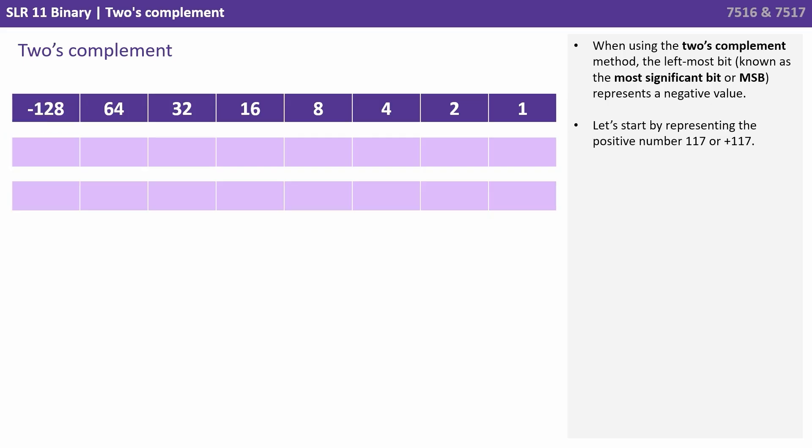Let's start by representing the positive number 117. Well firstly it's a positive number so we put a zero in the most significant bit. This is the sign bit. Remember zero is positive. If we put a one here we'd have negative 128.